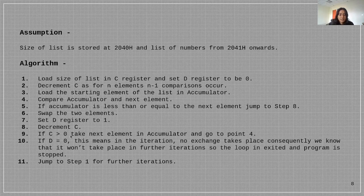Then we check if C is greater than 0. Then we take the next element in accumulator and go to point 0.4 if C is greater than 0. Point 0.4 was compare the accumulator and the next element.